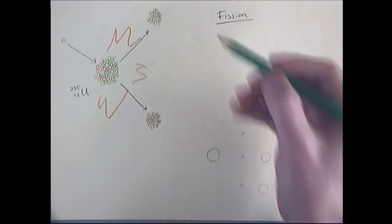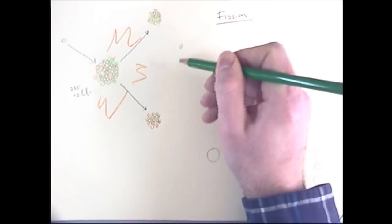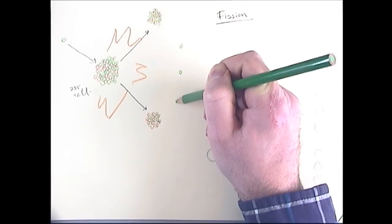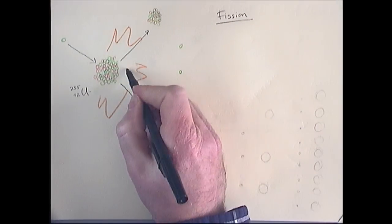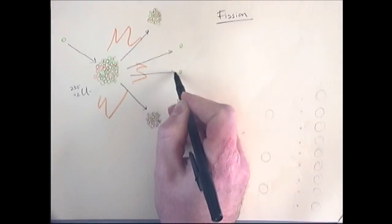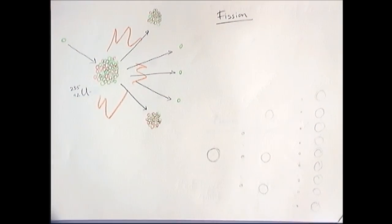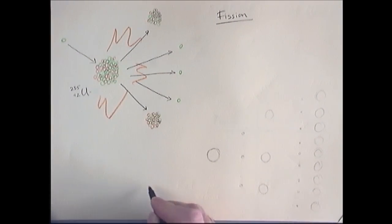Also released are two or three neutrons, and those other neutrons can go on to cause other fissions. They can become this neutron and collide with other unstable radioactive uranium. So you need to be aware of this process called a chain reaction.